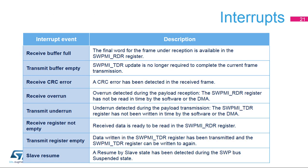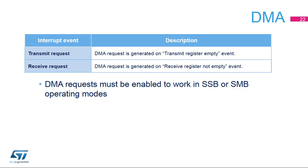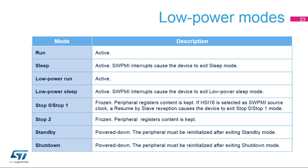Here is a summary of the events able to trigger an interrupt in the NVIC controller: transmit and receive buffers, transmit and receive registers, errors, CRC, overrun and underrun, and resume by slave. DMA requests are generated by the SWPMI for transmission and reception, and must be enabled when working in SSB and SMB modes. All SWPMI interrupts can wake up the device from sleep mode. If the device is put in stop mode, only a resume-by-slave event can wake up the device.